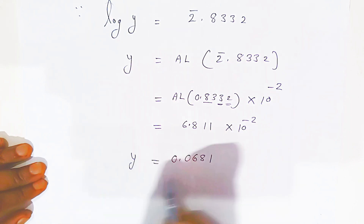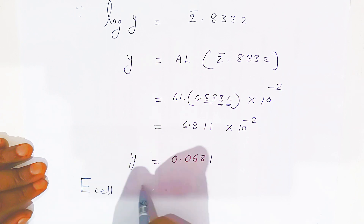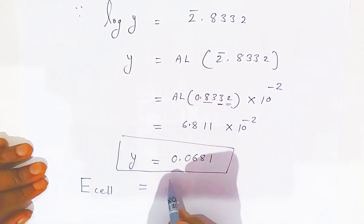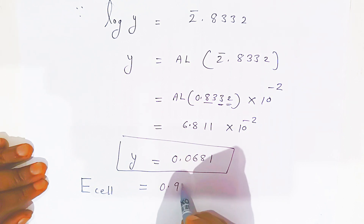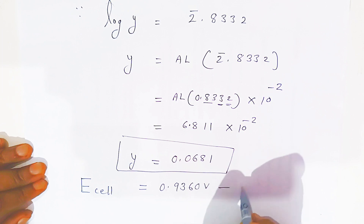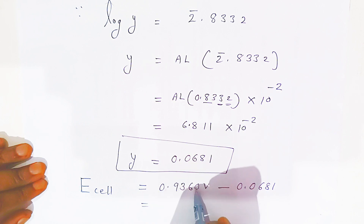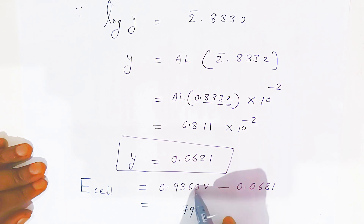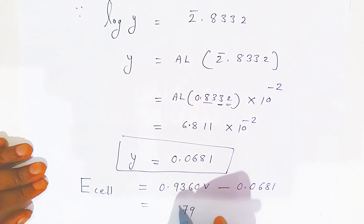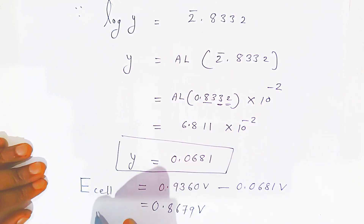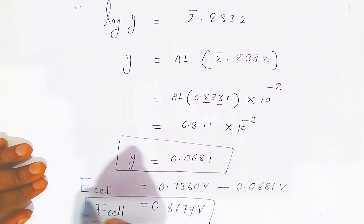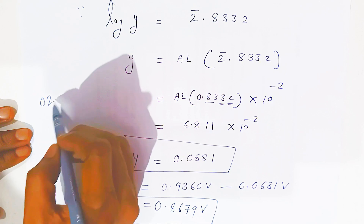Substituting y = 0.0681 back into the Nernst equation: E_cell = 0.936 minus 0.0681 = 0.8679 volt. This is the cell potential of the given electrochemical cell. This is how you solve this type of question in board examinations for a two-marks question.